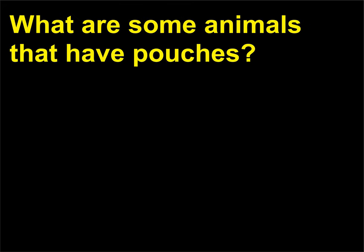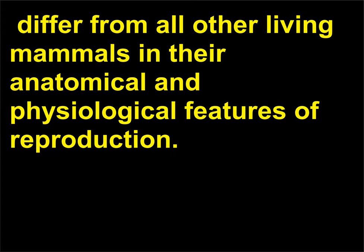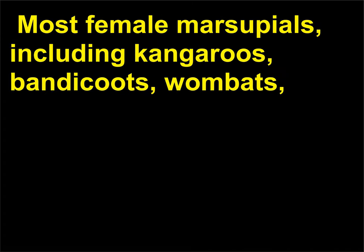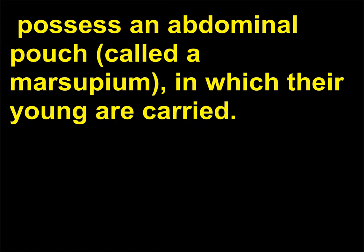What are some animals that have pouches? Marsupials differ from all other living mammals in their anatomical and physiological features of reproduction. Most female marsupials — including kangaroos, bandicoots, wombats, banded anteaters, koalas, possums, wallabies, and Tasmanian devils — possess an abdominal pouch called a marsupium, in which their young are carried. In some small terrestrial marsupials, however, the marsupium is not a true pouch but merely a fold of skin around the mammary milk nipples.